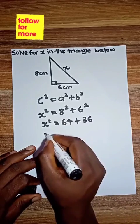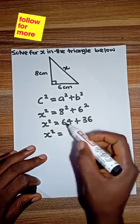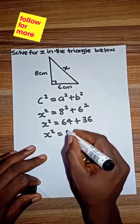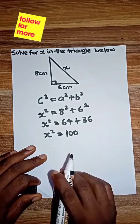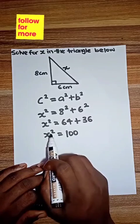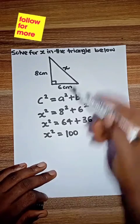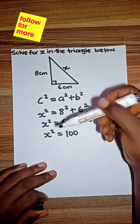x² = 64 + 36 is going to give you 100. So x² = 100. But are we looking for x²? No, we are looking for x. So we have to look for a way to cancel out the square.